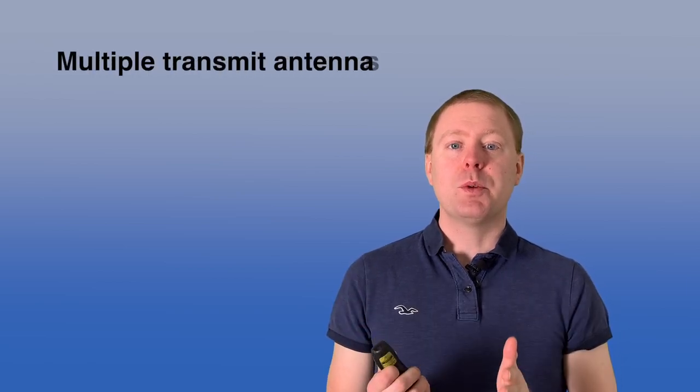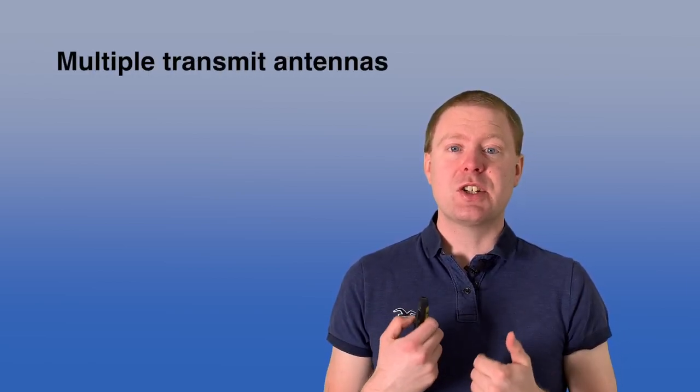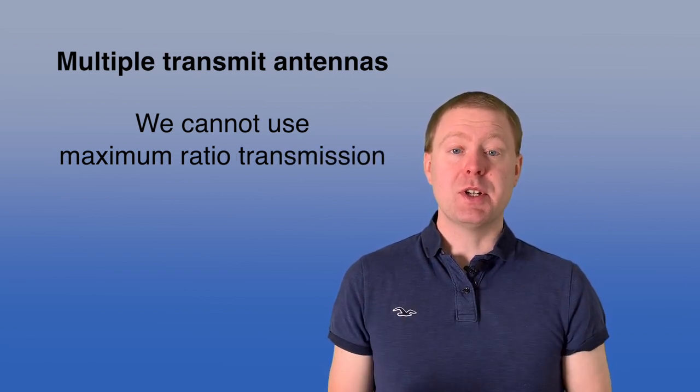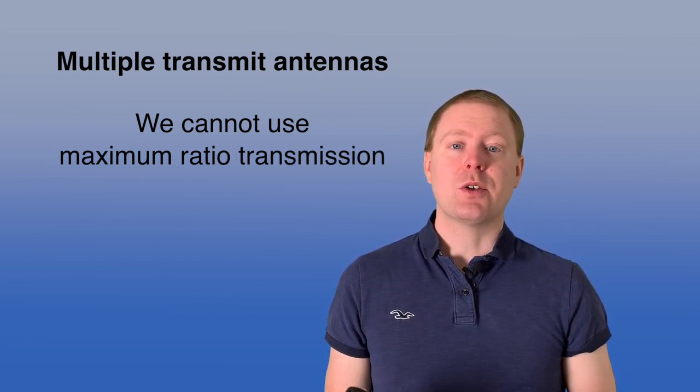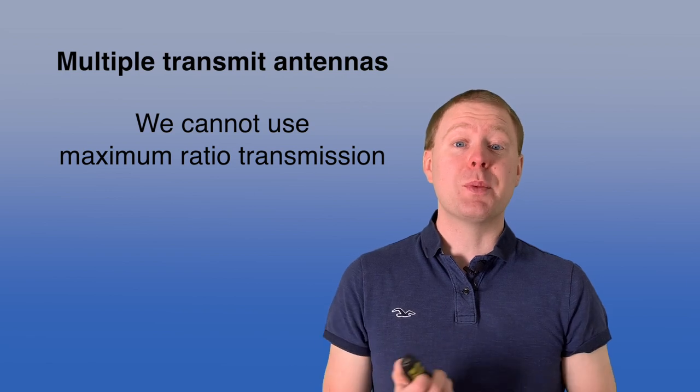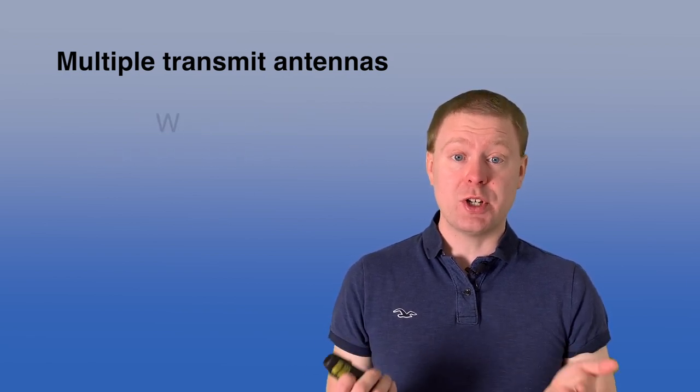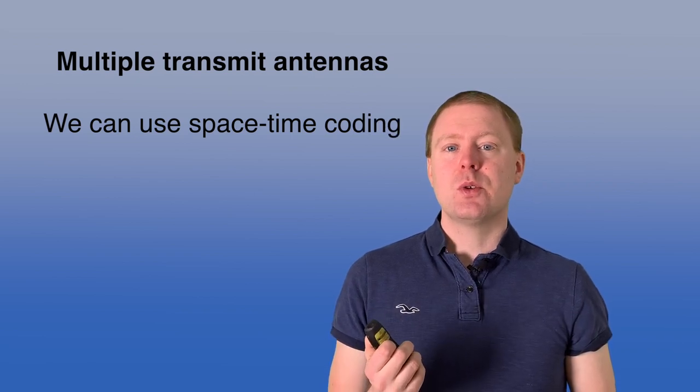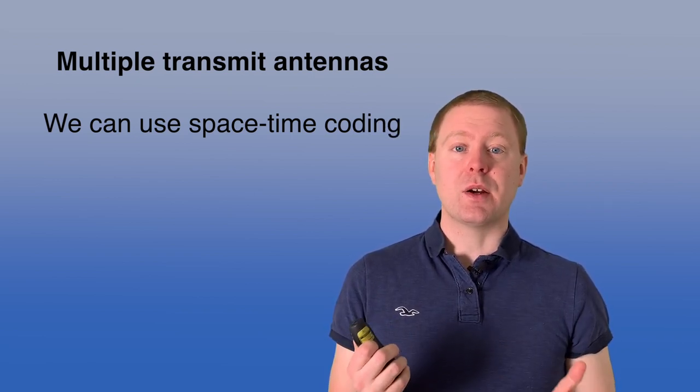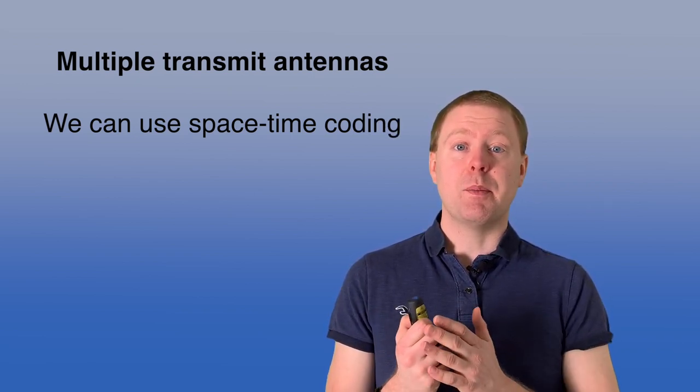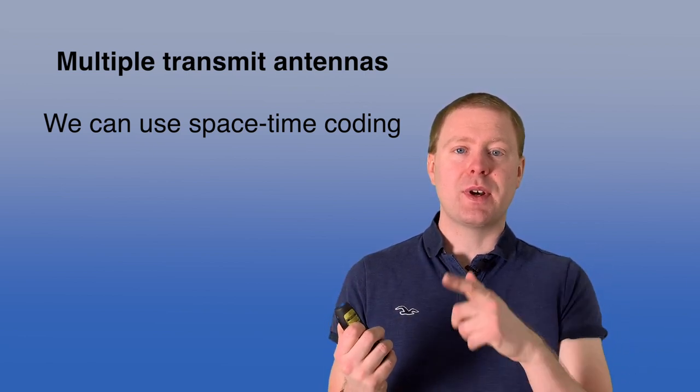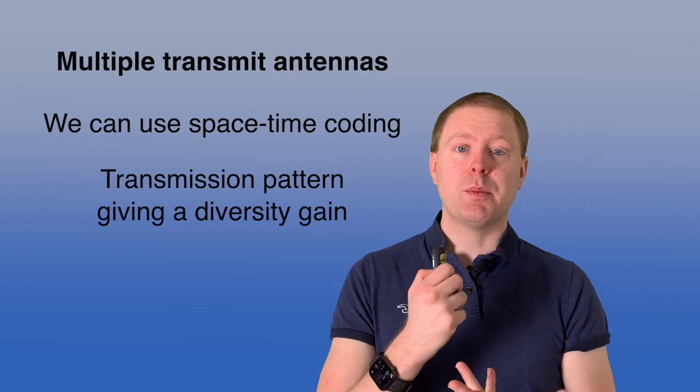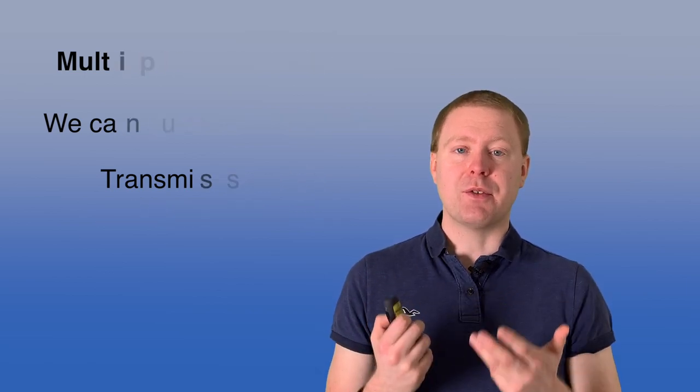If you instead have multiple transmit antennas, can you still achieve the same gains? Well, you can't do the optimal maximum ratio transmission because that would require you to know the channel. And that was the whole point with the outage concept that you don't know the channel. Still, there is something called space-time coding where you transmit the signals in a smart way over time and space. So a block of signals are transmitted over the antennas according to a certain pattern that allow the receiver to pull them apart and achieve a diversity gain.